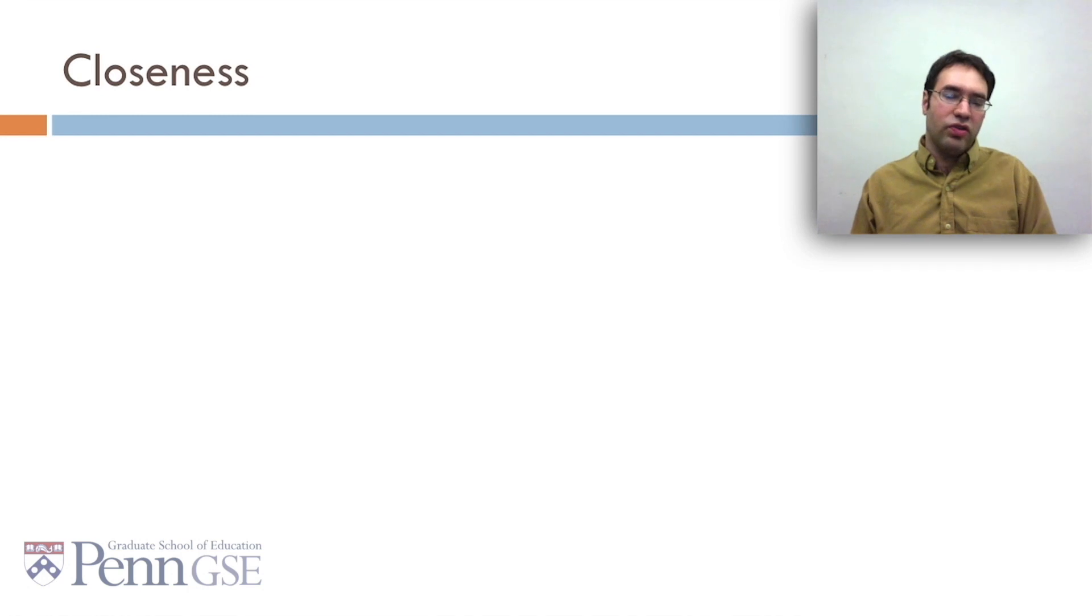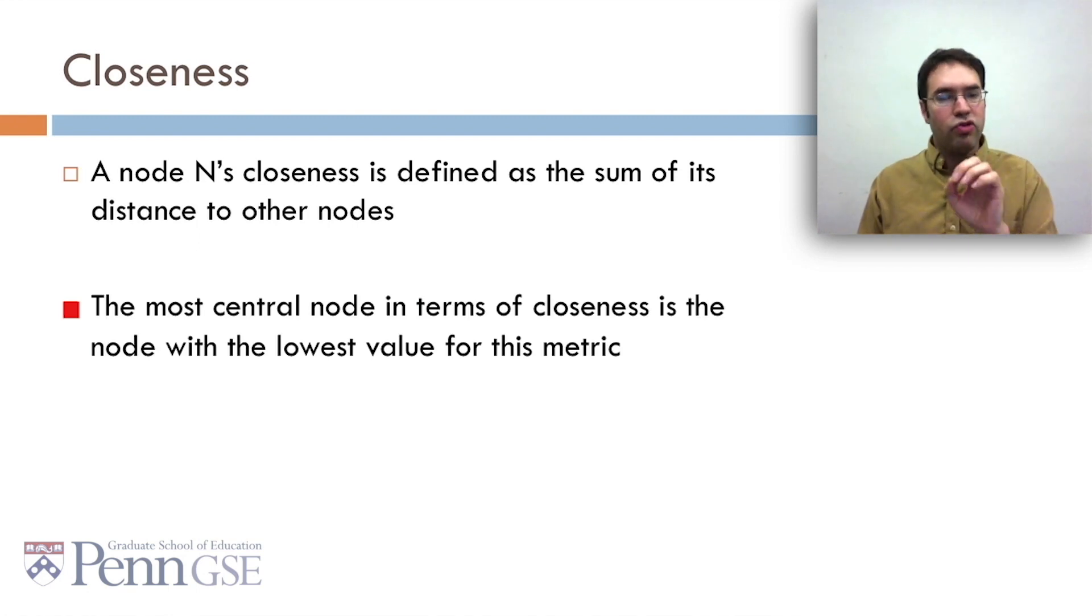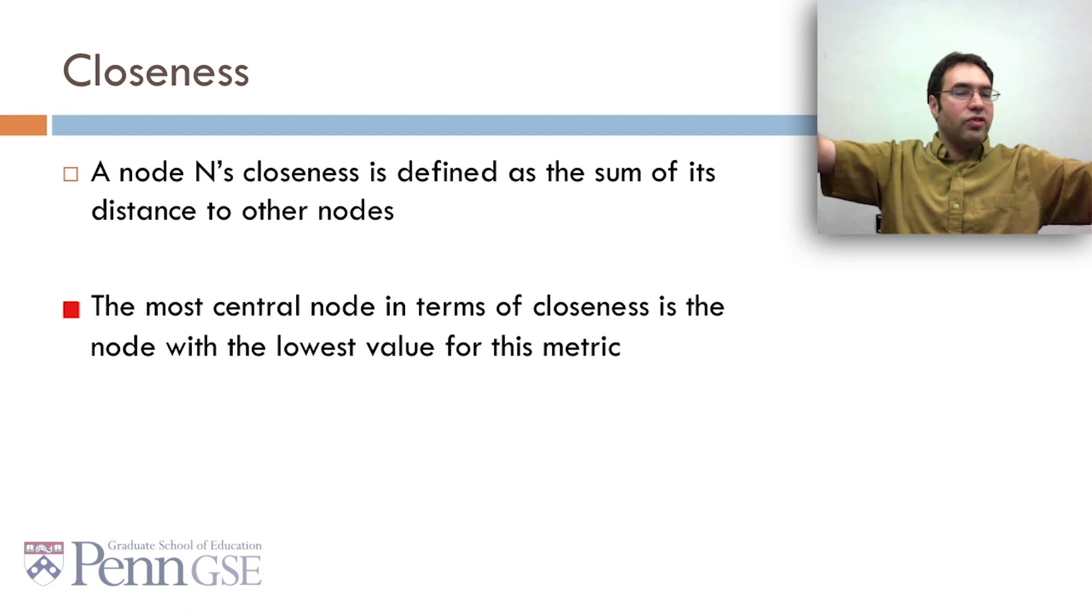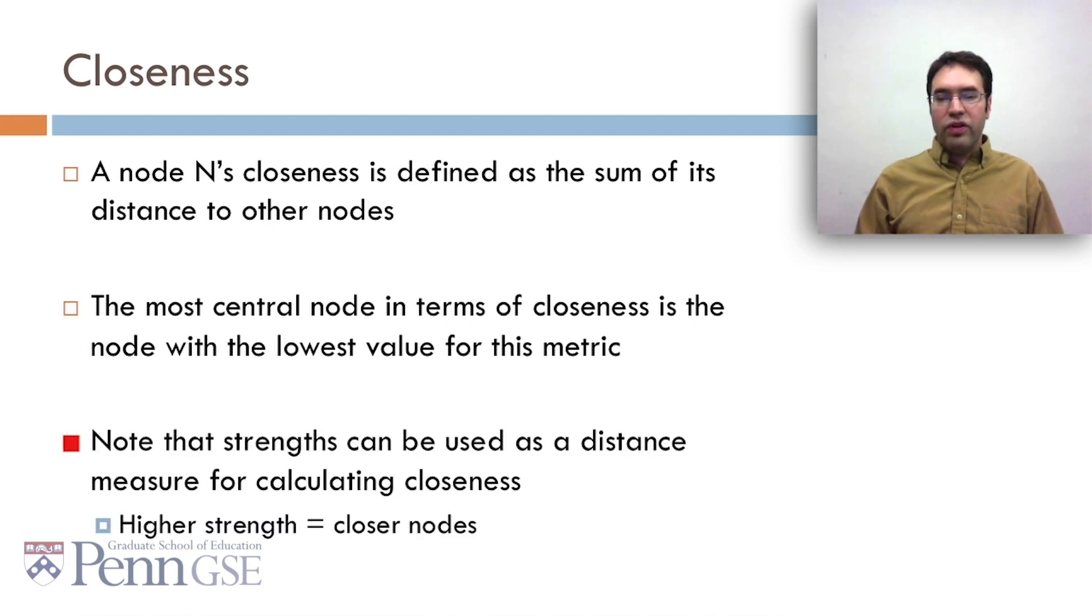A second measure of centrality is closeness. A node's closeness is divided as the sum of its distance to other nodes. The most central node, in terms of closeness, is the node with the lowest value, the node with the lowest average distance to everything else. Now, you might note that strengths can be used as a distance measure for calculating closeness. In other words, if you have strength on your links, you could actually use this information and say that higher strength is closer nodes.